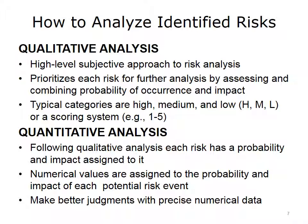Let's review more information about qualitative and quantitative risk analyses. The qualitative analysis uses a high-level, subjective approach. It triages the risks by assessing the probability of occurrence and the impact, which are often expressed with ordinal rankings like high, medium, or low. You can also assign a score of 1 to 5 or 1 to 10 to better pinpoint the relative probability or relative impact of the risk. Once you've organized the list by scoring or ranking, you know which high-priority risks to move forward into quantitative analysis, which assigns numerical values for the probability and impact for each potential risk event.